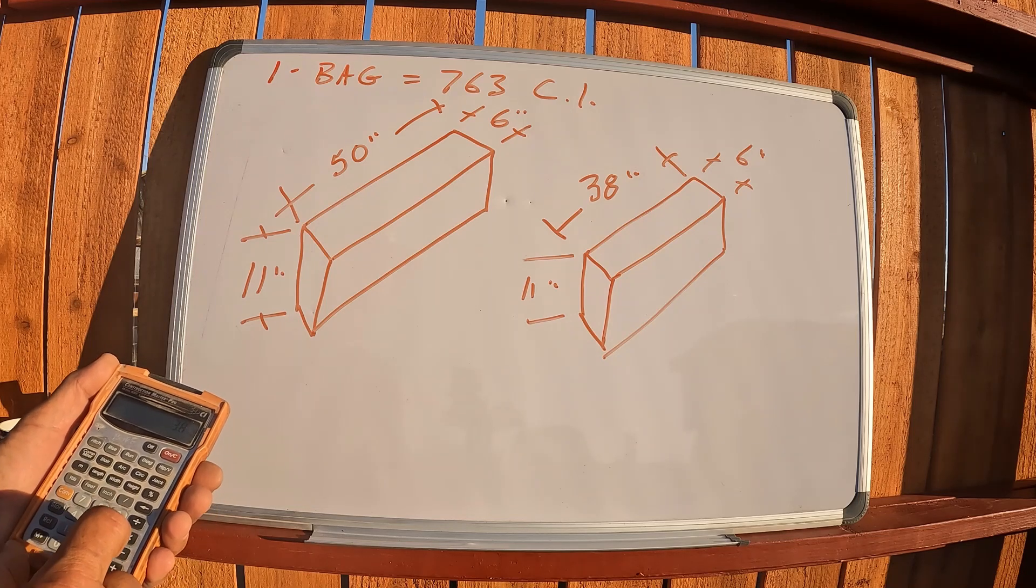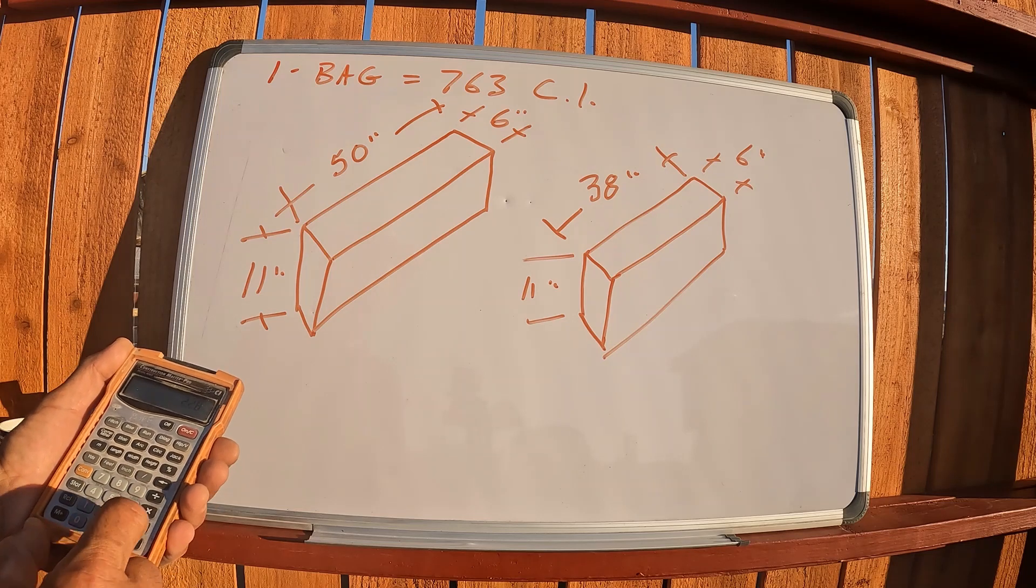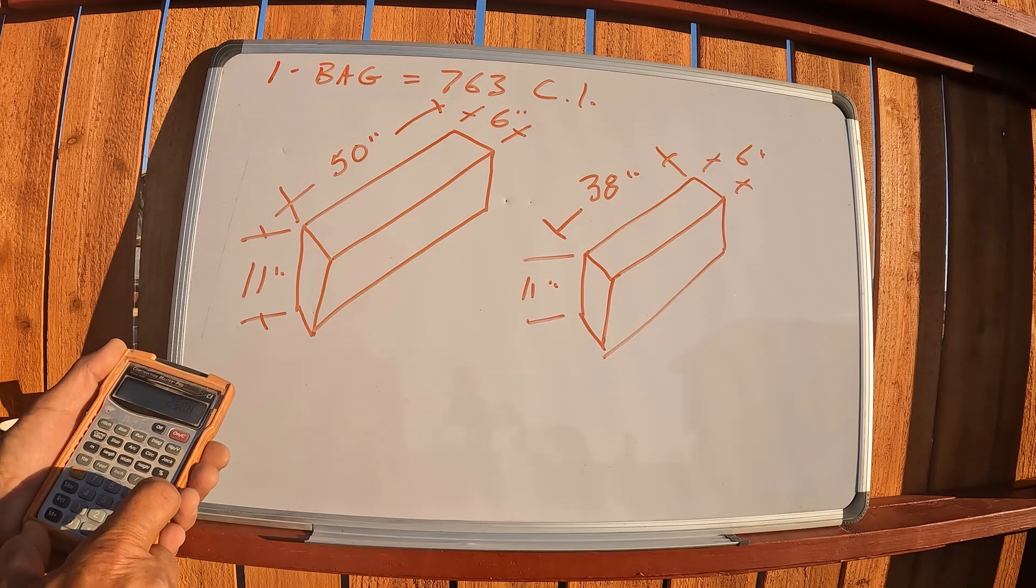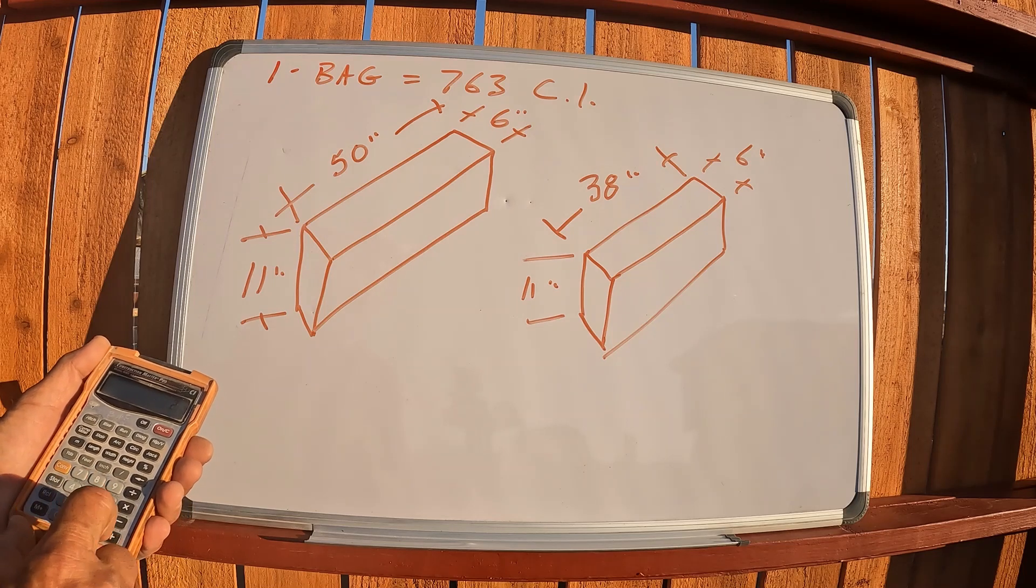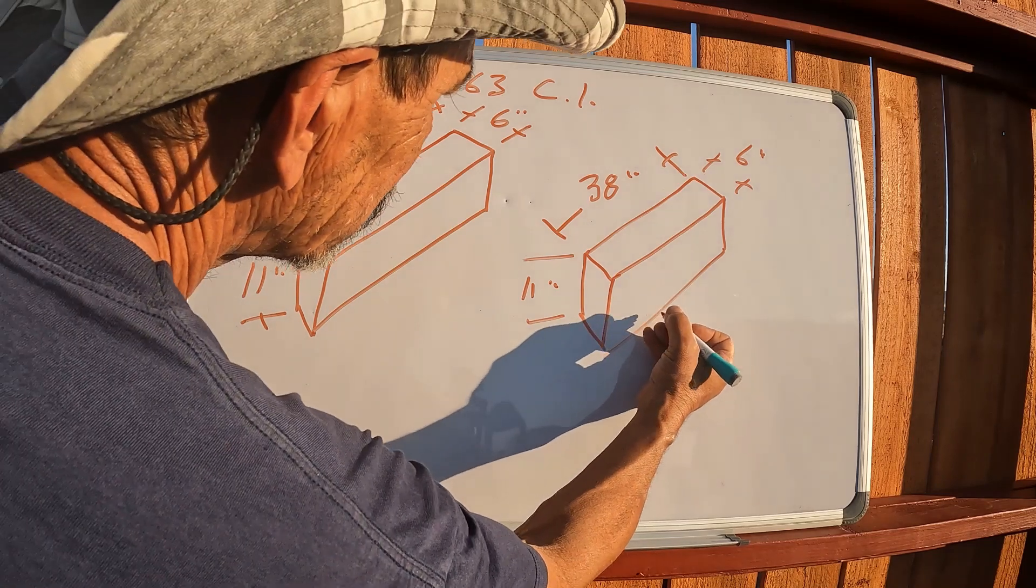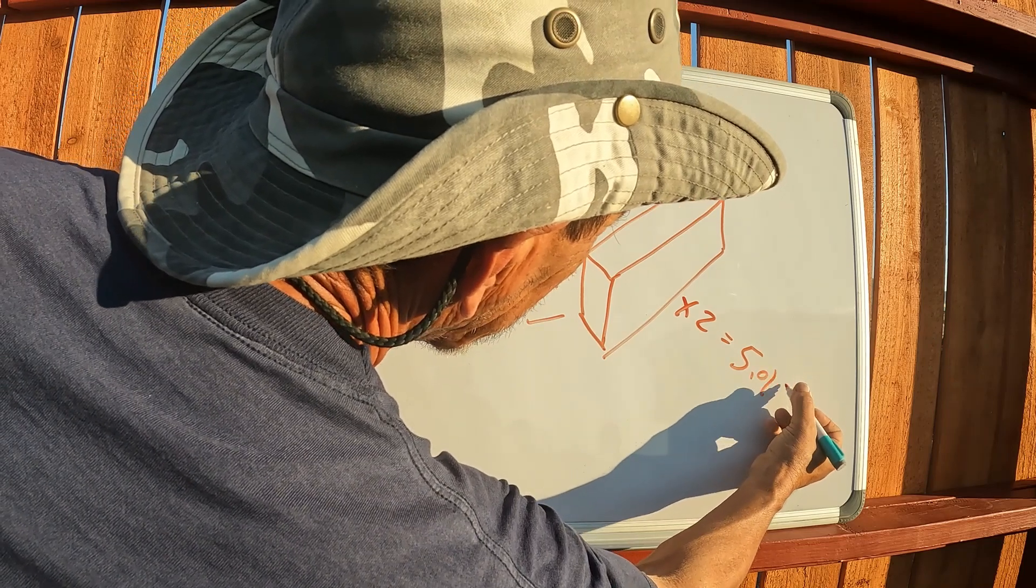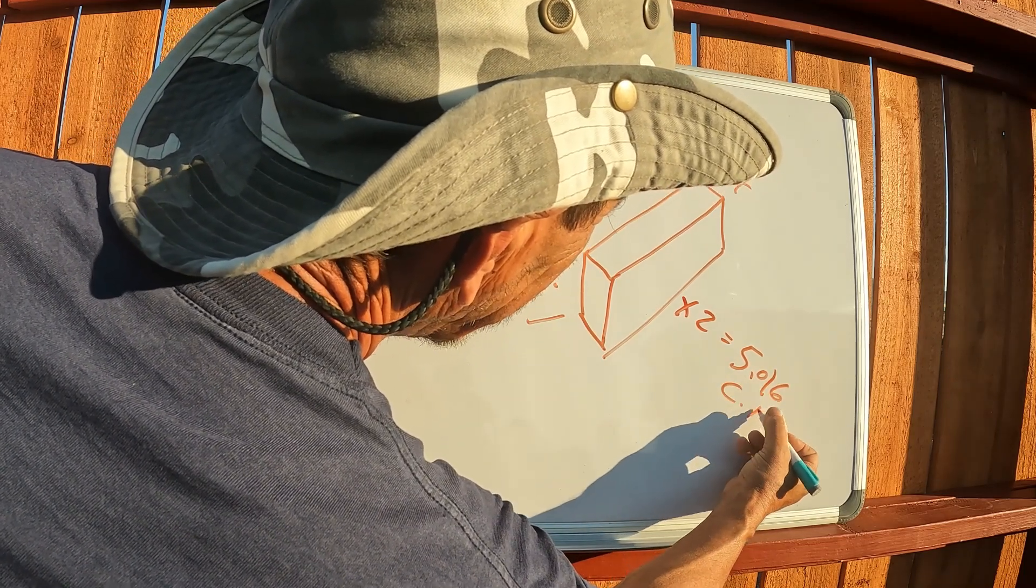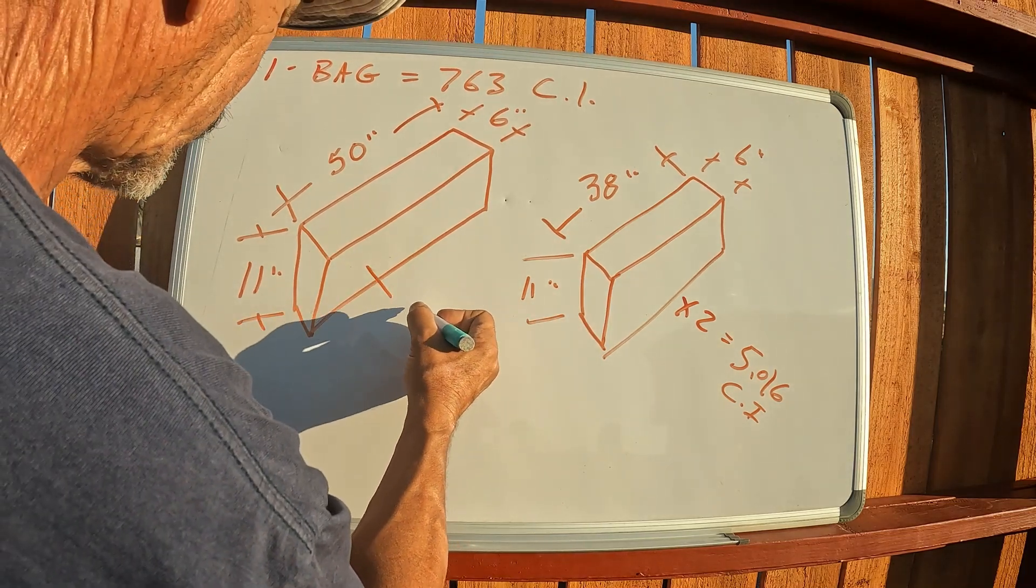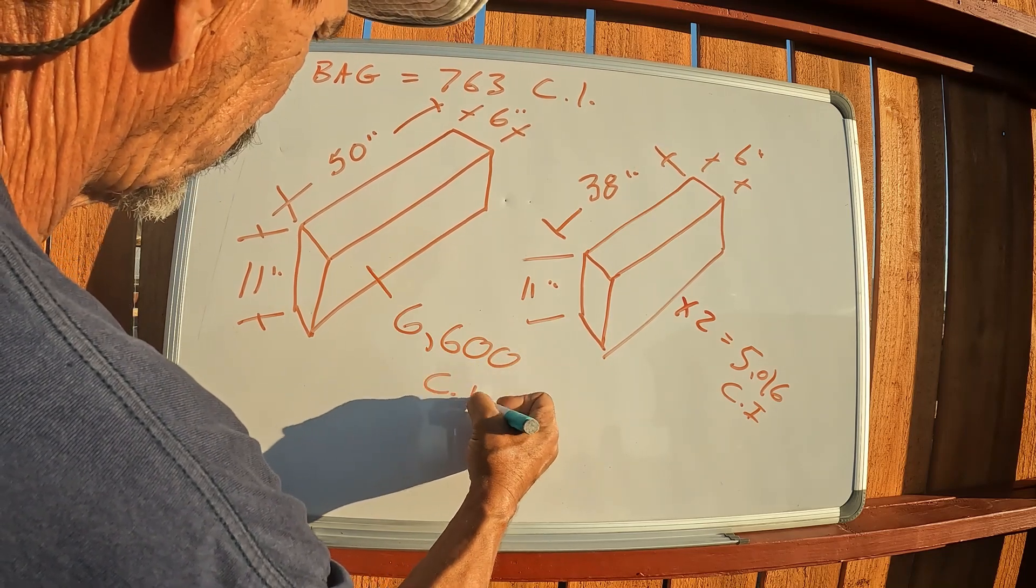38 times 6 equals 228 times 11, 2508 times 2 equals 5016. 5016 cubic inches for two of those. This was 6600, 6600 cubic inches.